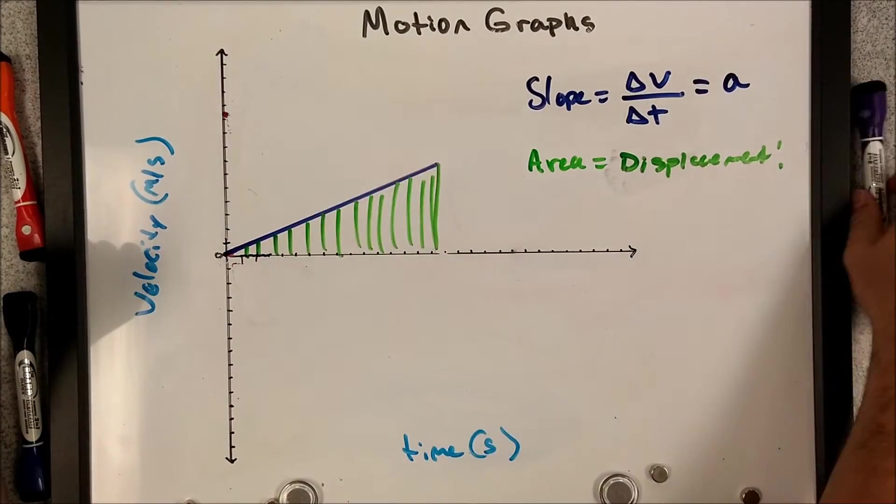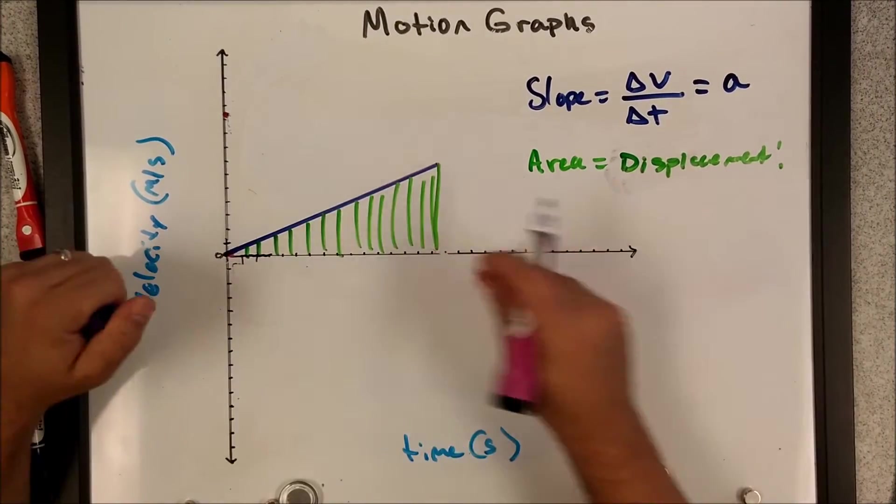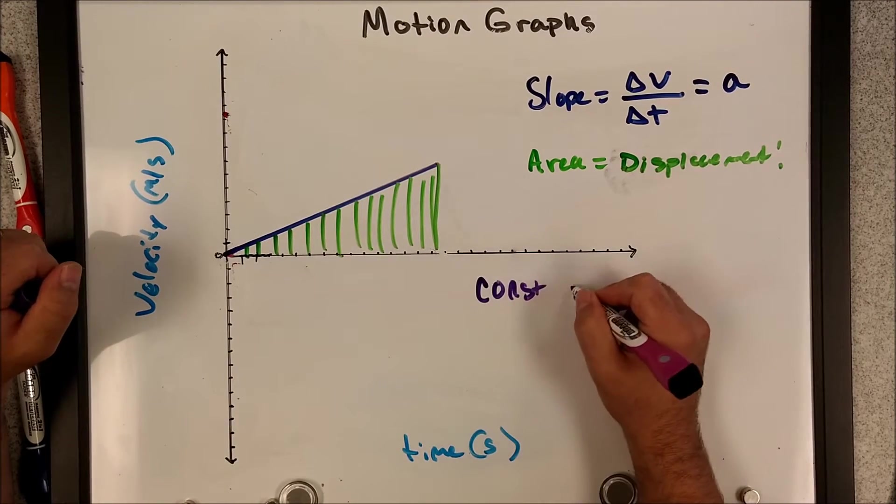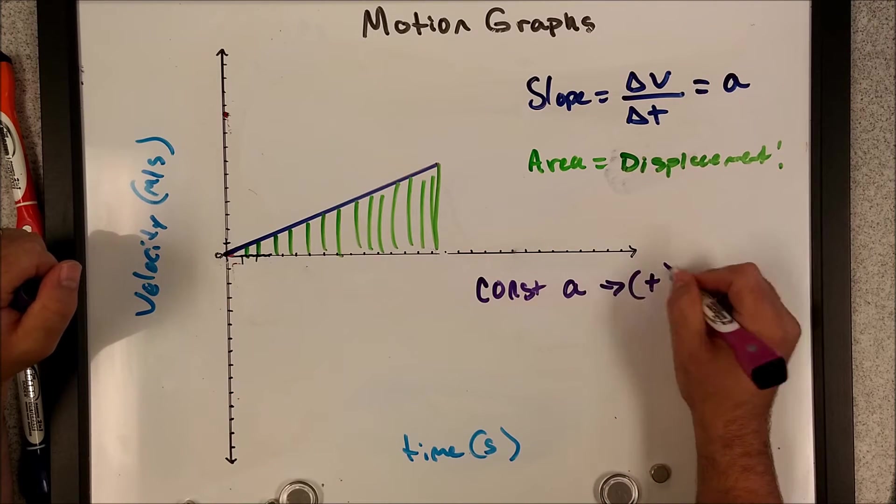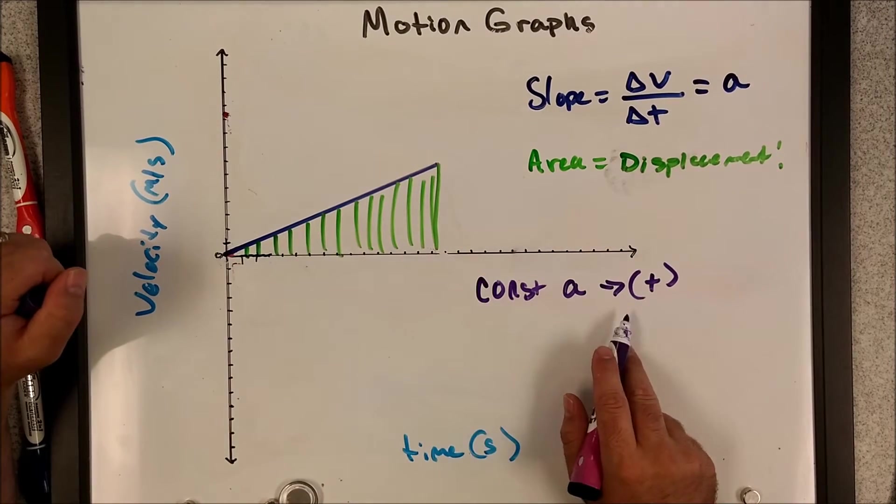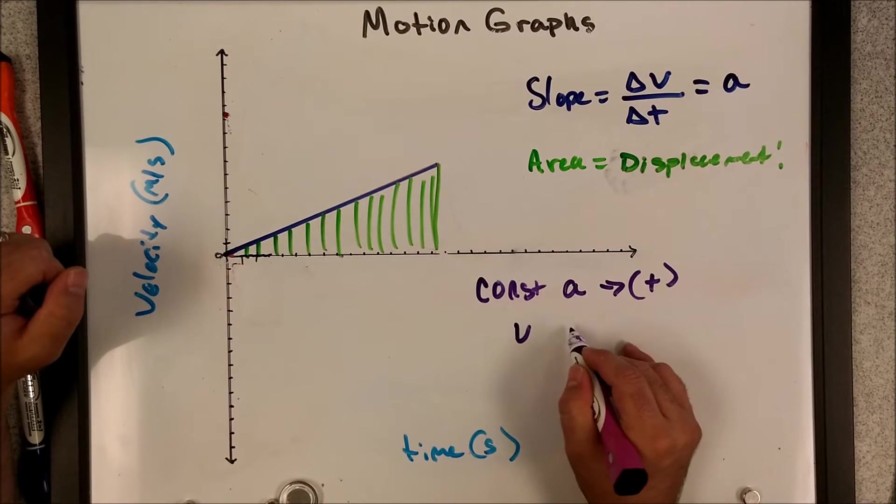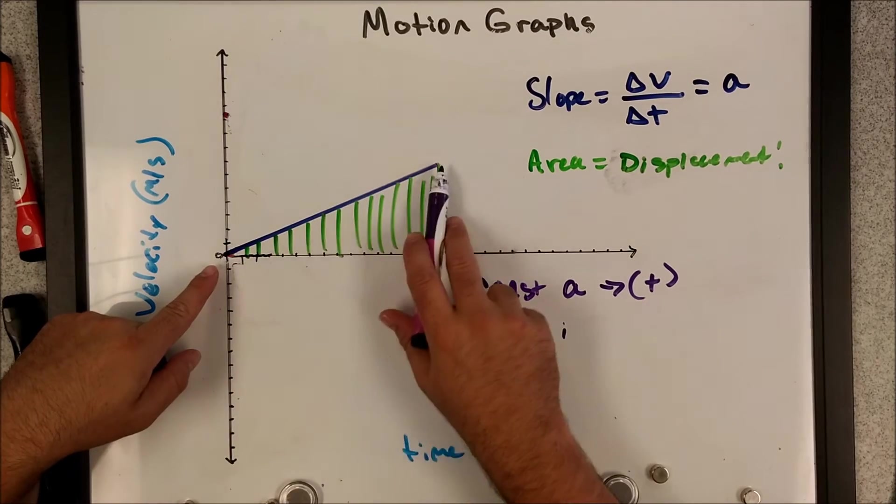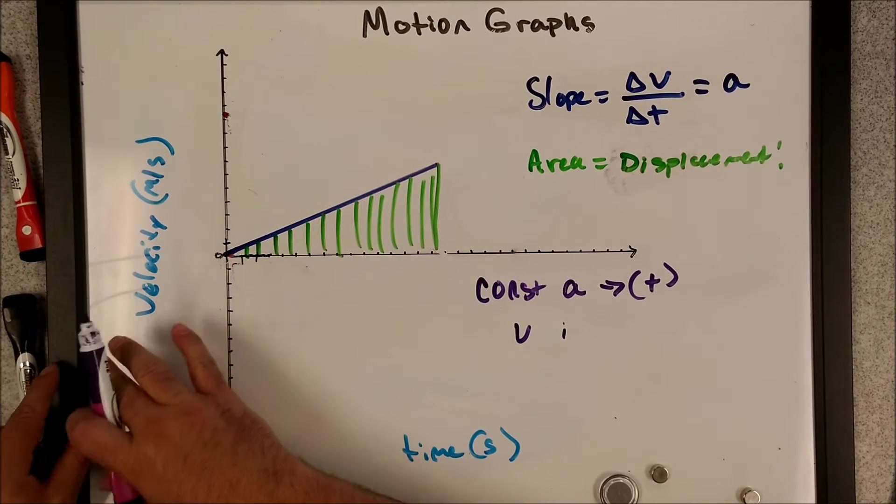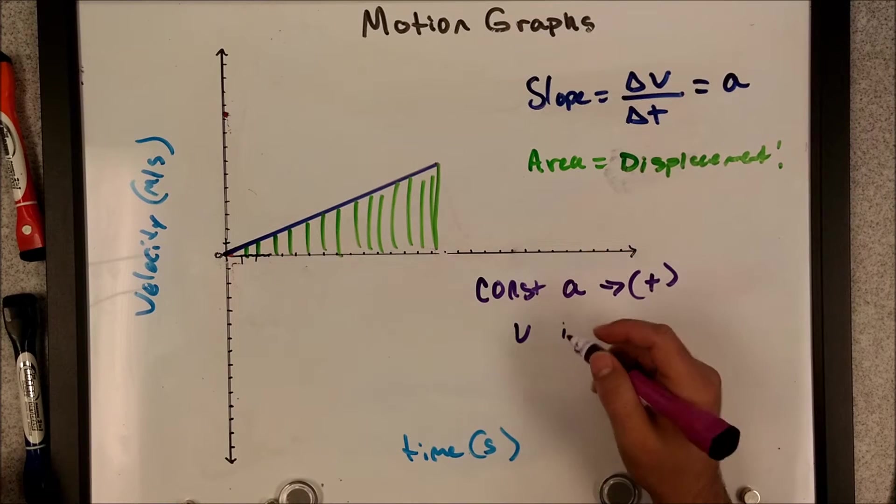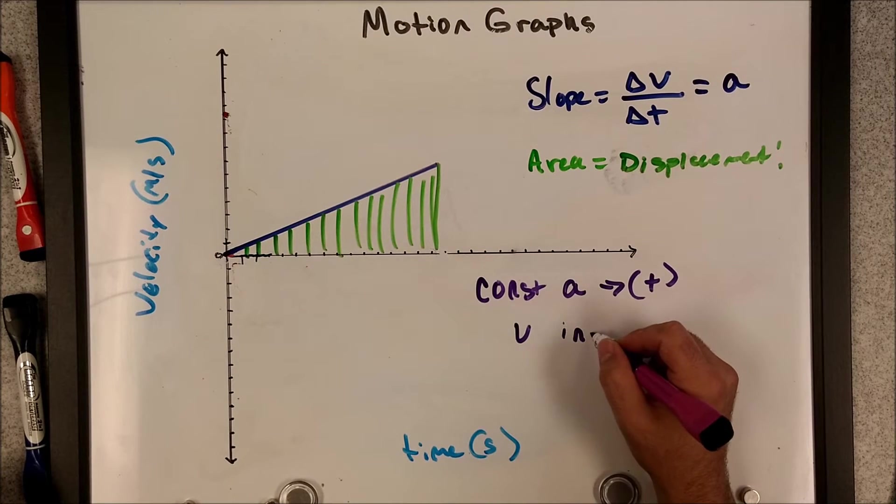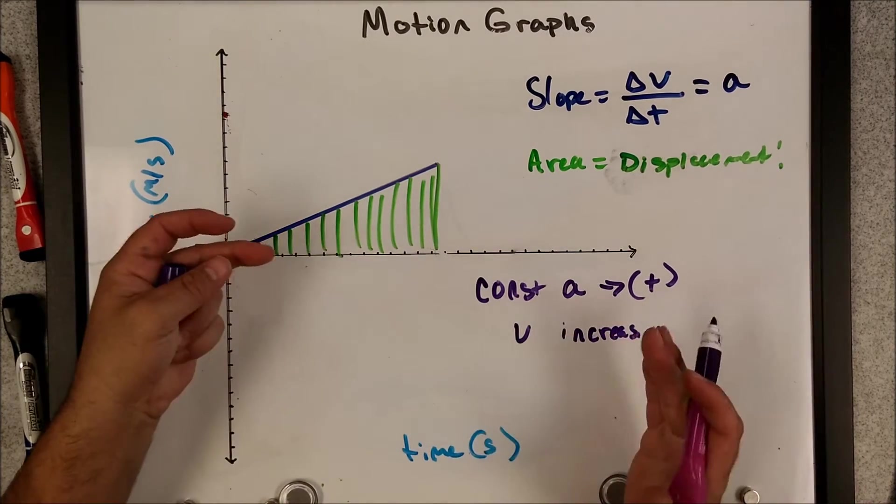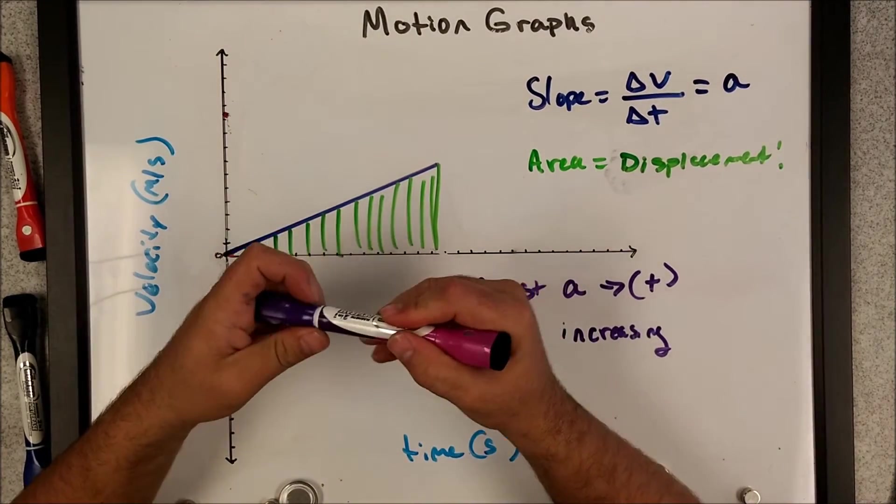And I will break that down in an example video shortly. Probably the next video will be a series of examples where I actually use numbers. For now, I just want that concept in there. Okay. So, area is displacement. Slope is acceleration. So, in this example, what do I know? I know that I have a constant slope, which means I have a constant acceleration. I also know that that acceleration is positive because my slope is positive. If I have a constant acceleration, that means my velocity is indeed increasing.